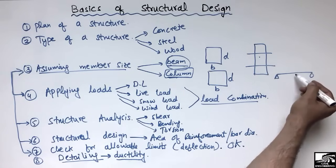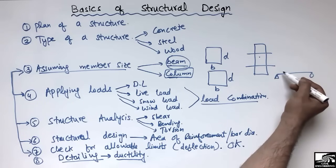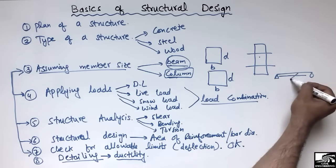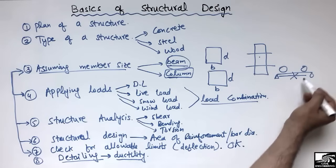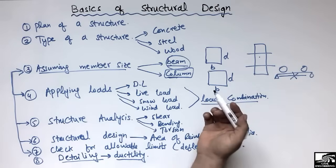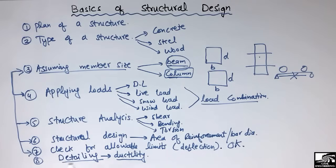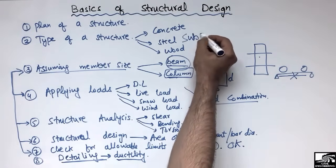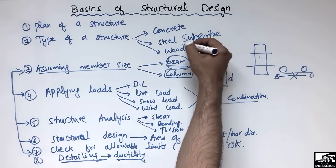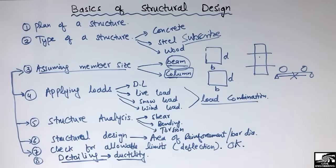For a beam, we should overlap the bar not at the center but at the edges of the column. There are specific rules that should be followed in detailing. The last step of detailing mainly affects the ductility of the structure. Hope you guys understand — don't forget to subscribe to our channel for detailing videos. Thank you for watching.